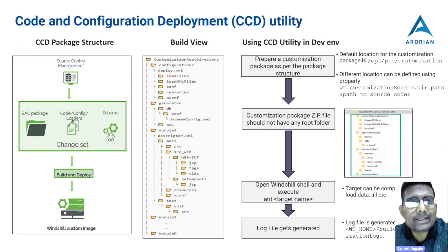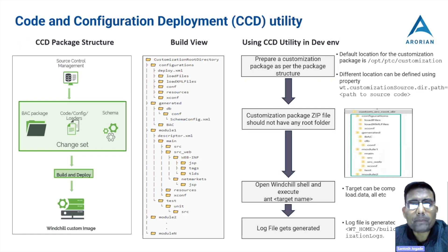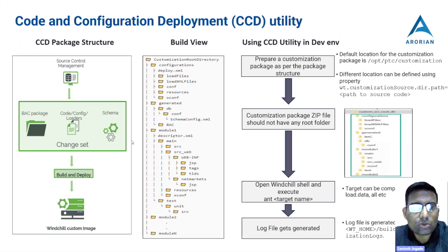Now let me go into the details of CCD — Code and Configuration Deployment. PTC introduced this process starting with Windchill 12.1. Whenever you install Windchill, you get this CCD utility by default, which is the deploy.xml file located in the Windchill installation directory under bin/customization tools. This CCD utility requires a defined directory structure.